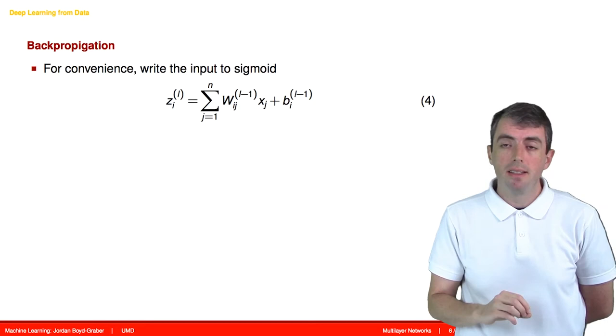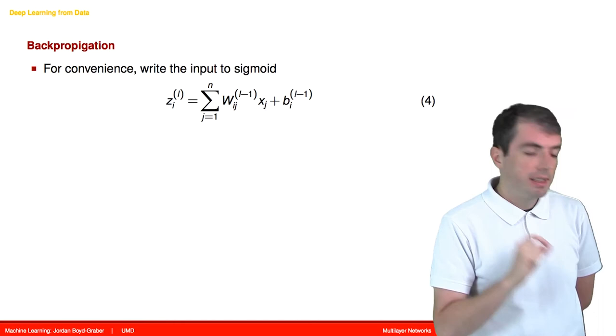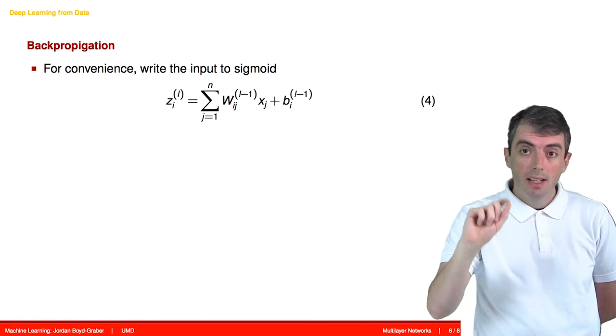For convenience, let's write the input to a sigmoid function in terms of a single variable z. So this is basically just what will get input into a sigmoid at any particular node. So you take some layer L and you're looking at the ith node in that layer.